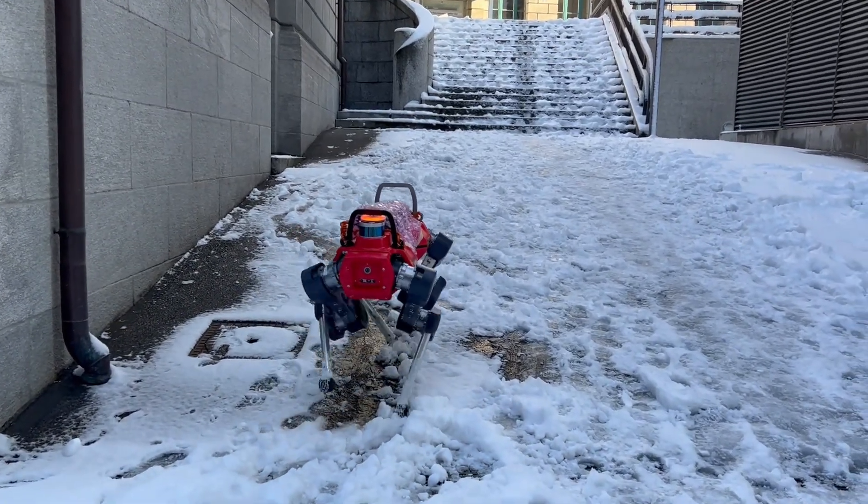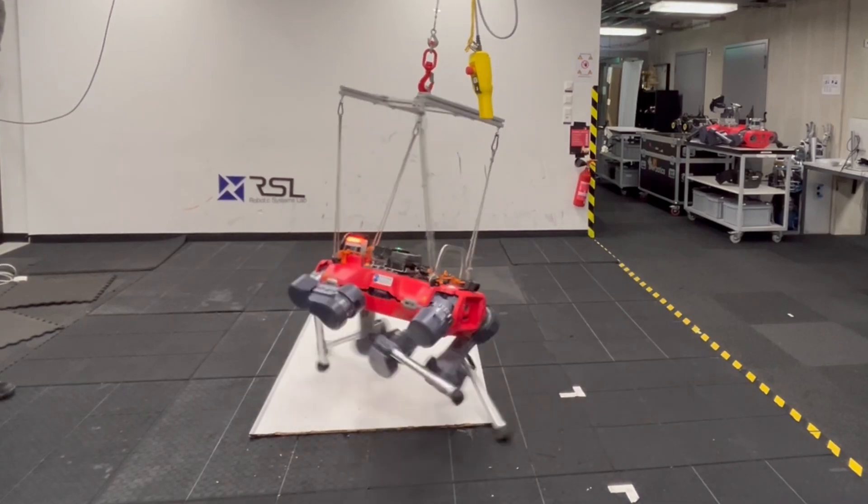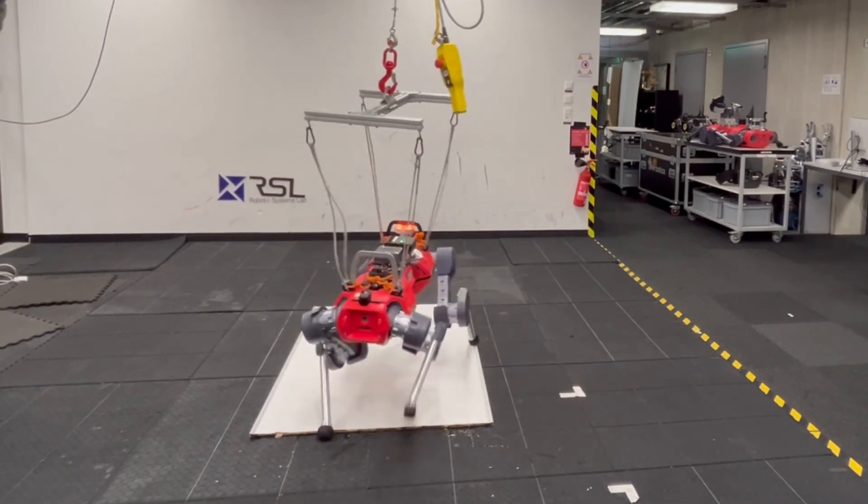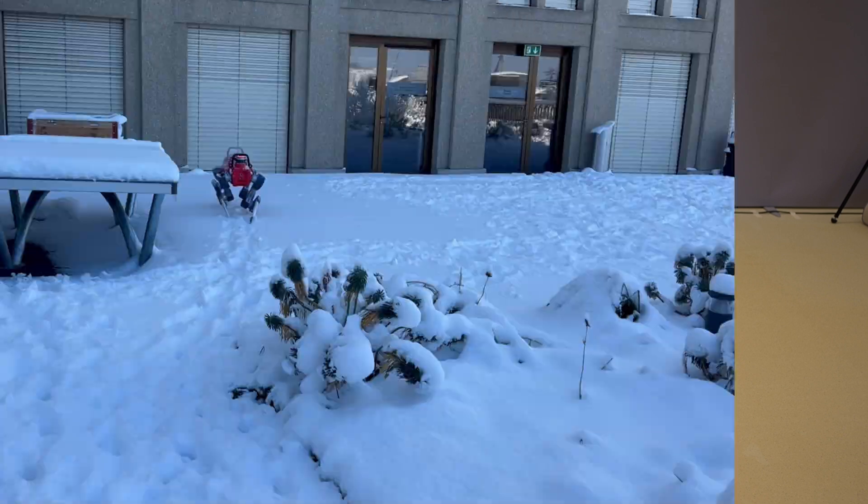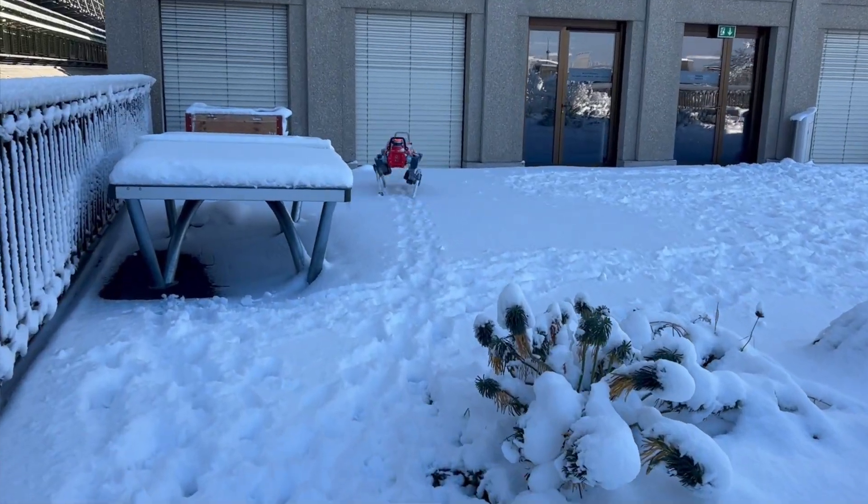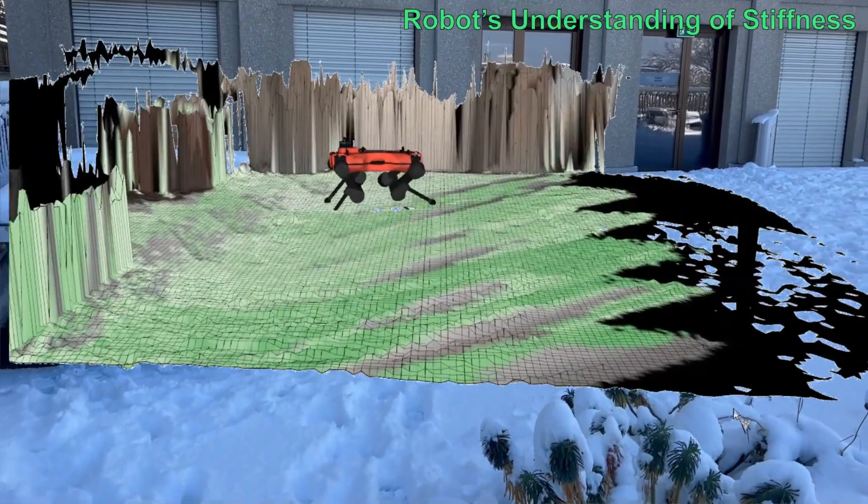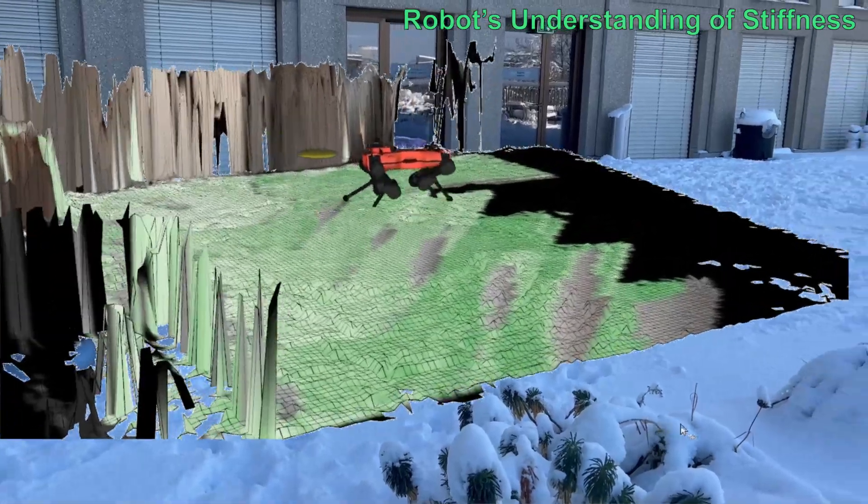Legged robots have great potential in navigating challenging terrains. However, to successfully handle terrains like slippery surfaces, they need to identify the physical terrain properties of the footholds or even anticipate it from vision before contact so that they can choose a proper policy.